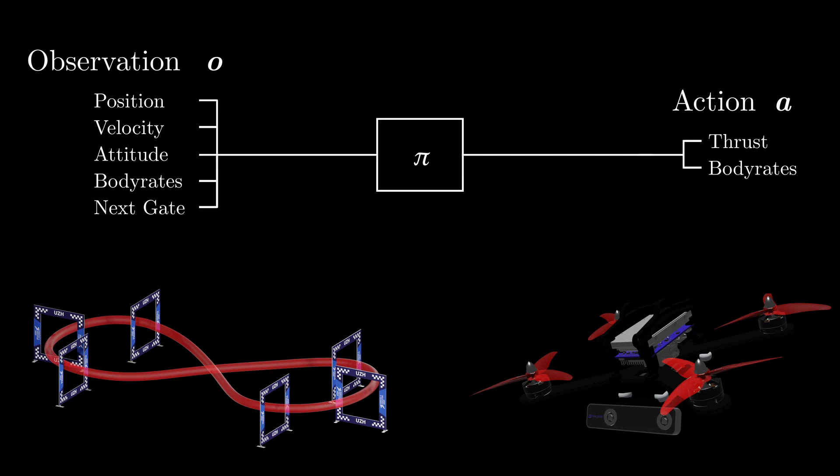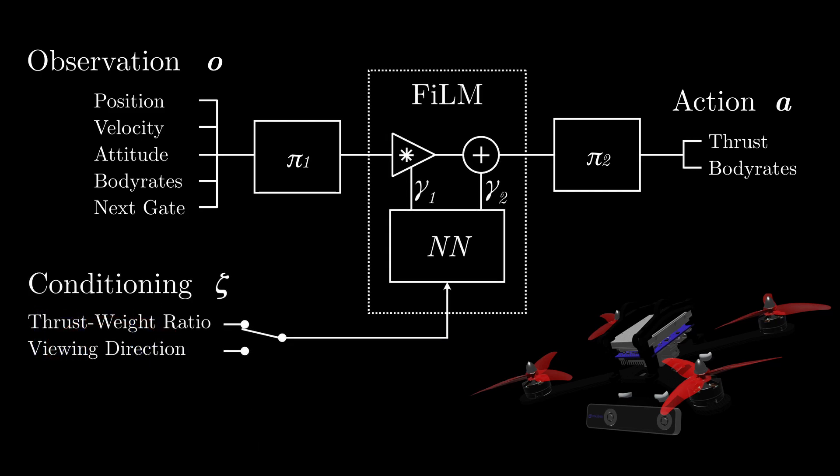First, without loss of generality, we can split the fully connected control network into two parts. We introduce an affine transformation, called a film layer, to transform the intermediate activations. The coefficients of the affine transformation are computed by a neural network which only sees the auxiliary user input.